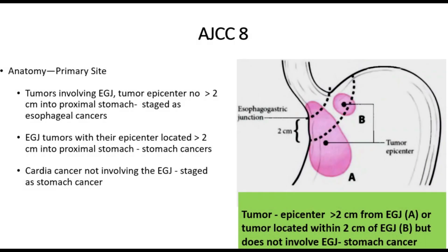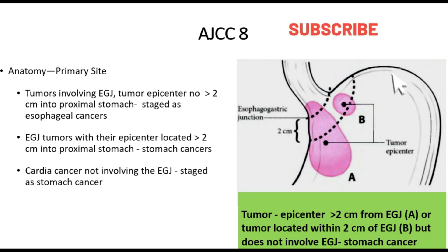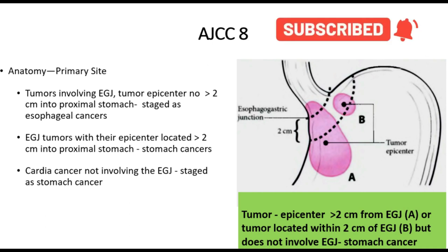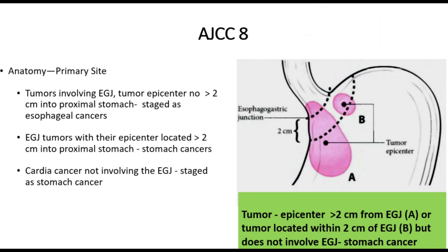Cardiac cancers not involving the oesophagogastric junction are staged as stomach cancer. In Figure A, if the tumor epicenter is more than 2 cm from the oesophagogastric junction, or the tumor is located within 2 cm of the oesophagogastric junction but does not involve it, those tumors will be labelled and managed as per the gastric cancer guidelines.